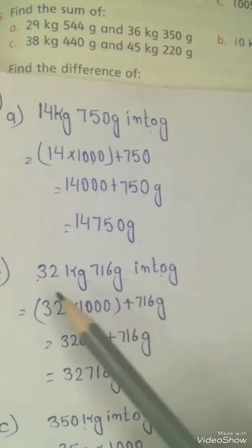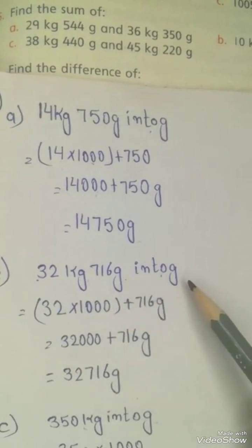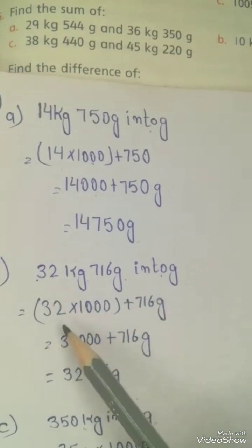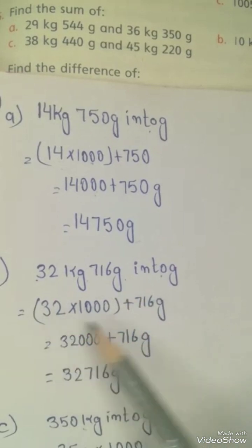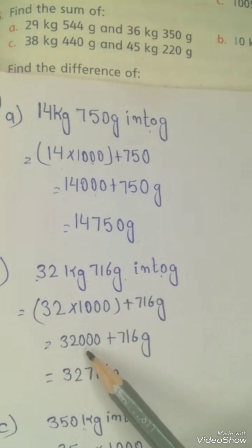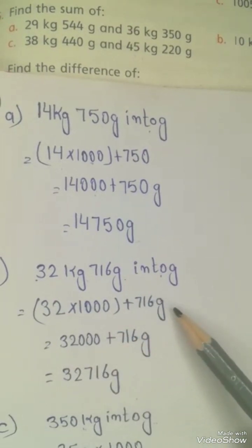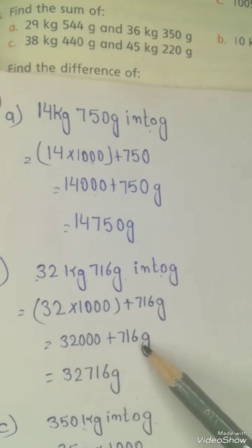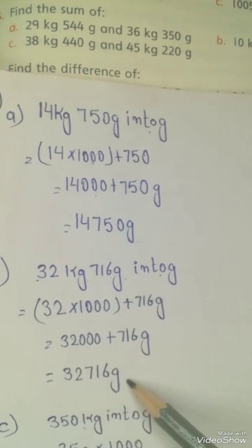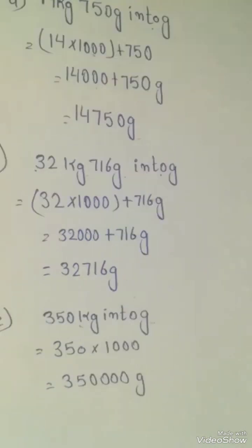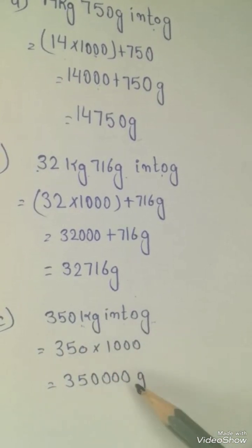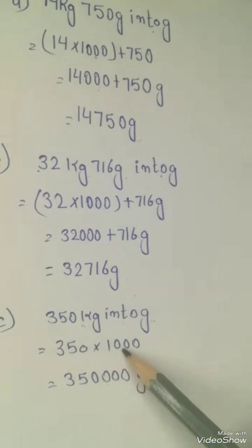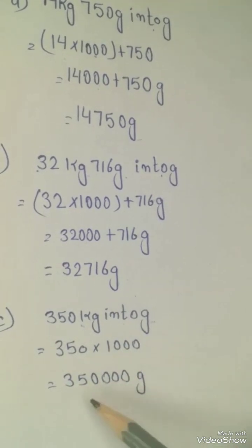Now the next question: 32 kg 716 g into grams. We will write 32 here and multiply it. In grams it is one thousand, so we multiply 32 with 1000 and this answer will come. Now we have 350 kilograms into grams. We have only kilograms here, so we multiply with 1000 and we will get this answer.